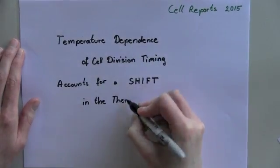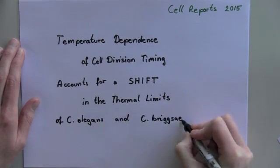Temperature dependence of cell division timing accounts for a shift in the thermal limits of C. elegans and C. briggsae.